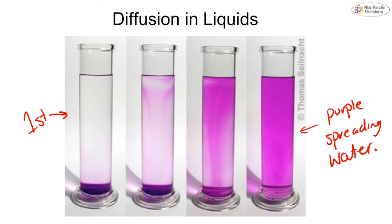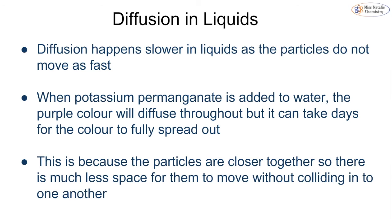Diffusion happens slower in liquids than in gases because the particles don't move as fast. When potassium permanganate is added to water, the purple color will spread throughout, but it could take up to days depending on how large the water sample is. Because particles in a liquid are much closer together, it's difficult for the potassium permanganate particles to get in amongst the water particles. In gases, particles are much farther apart, so diffusion happens much faster.